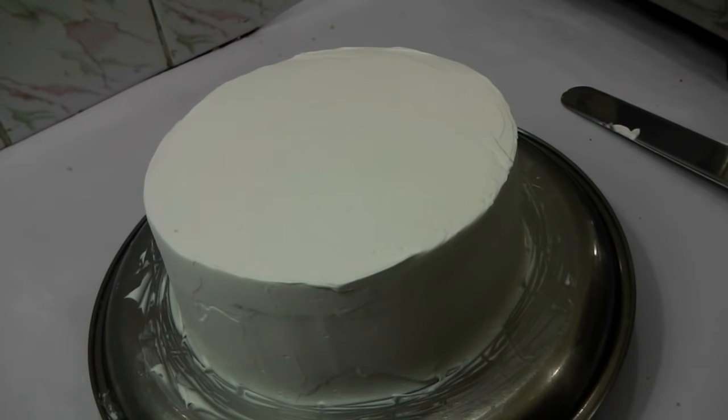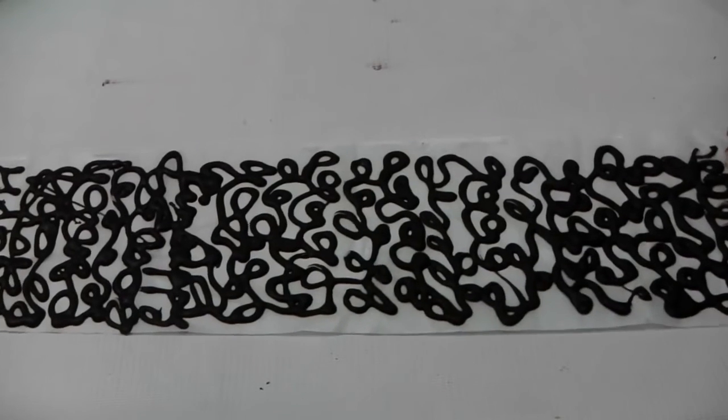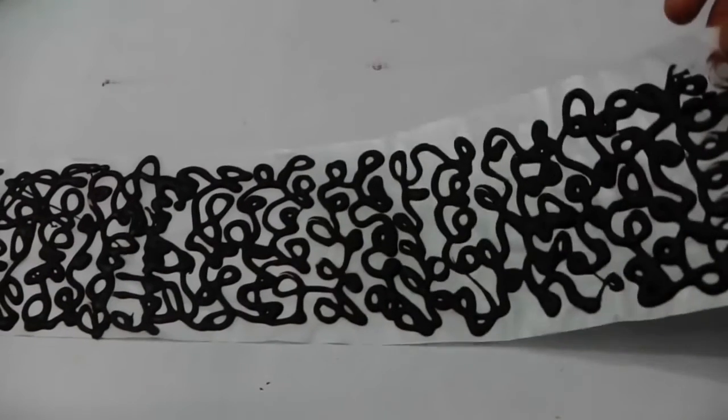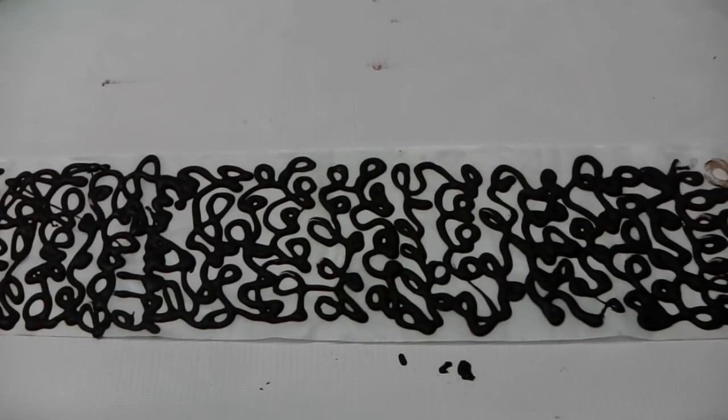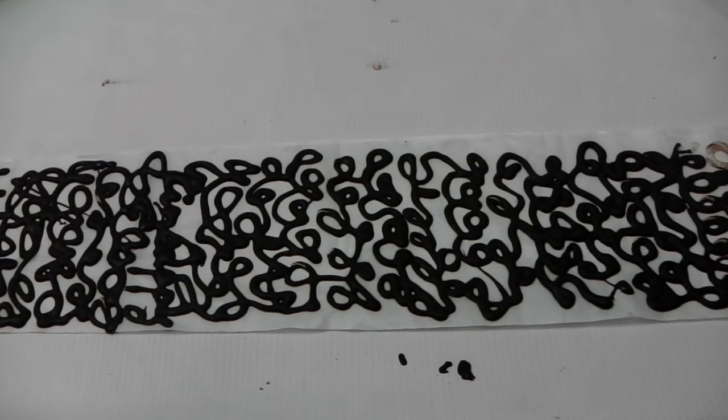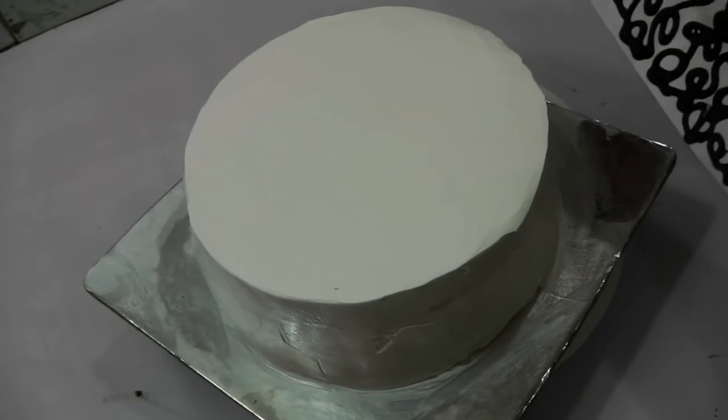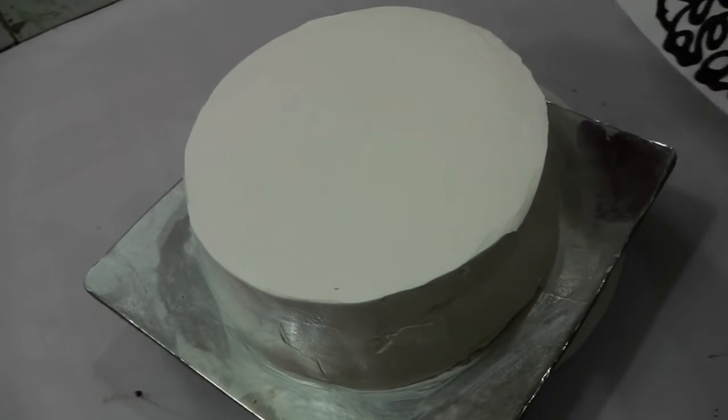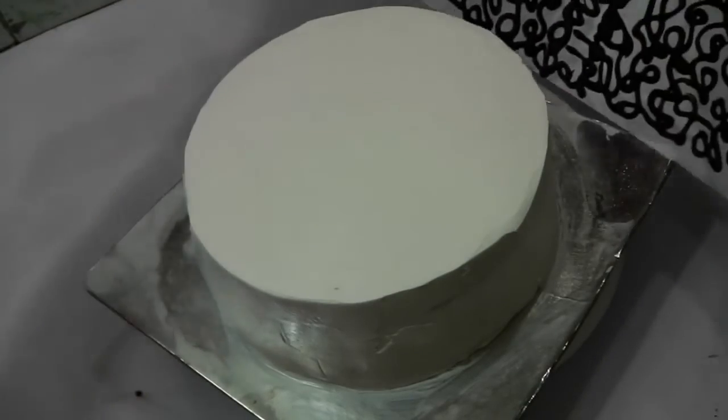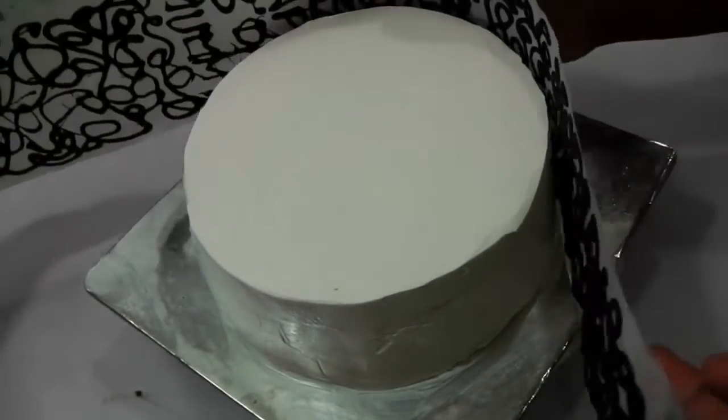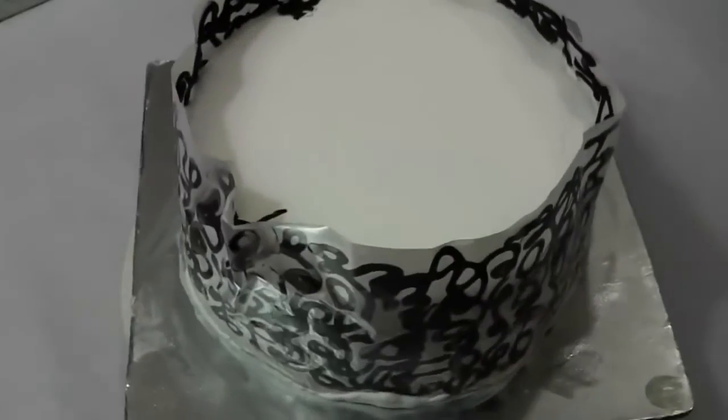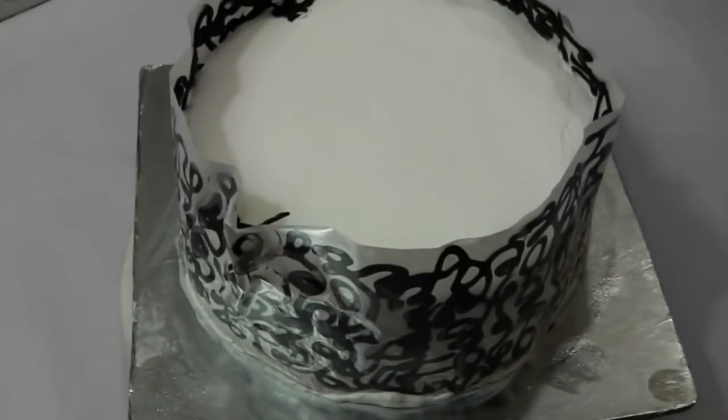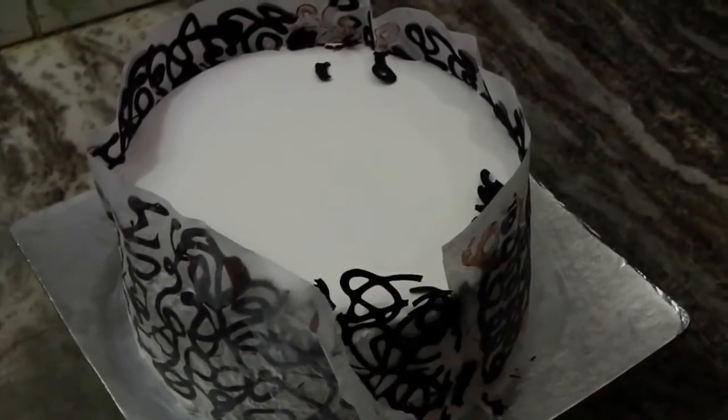On a sheet of parchment paper, we have drawn some zigzag thing using some melted chocolate—dark chocolate. Now we're going to stick this in our cake, so better if you get a helping hand. Keep this in the fridge for about 5 minutes. Now let's peel this parchment paper.